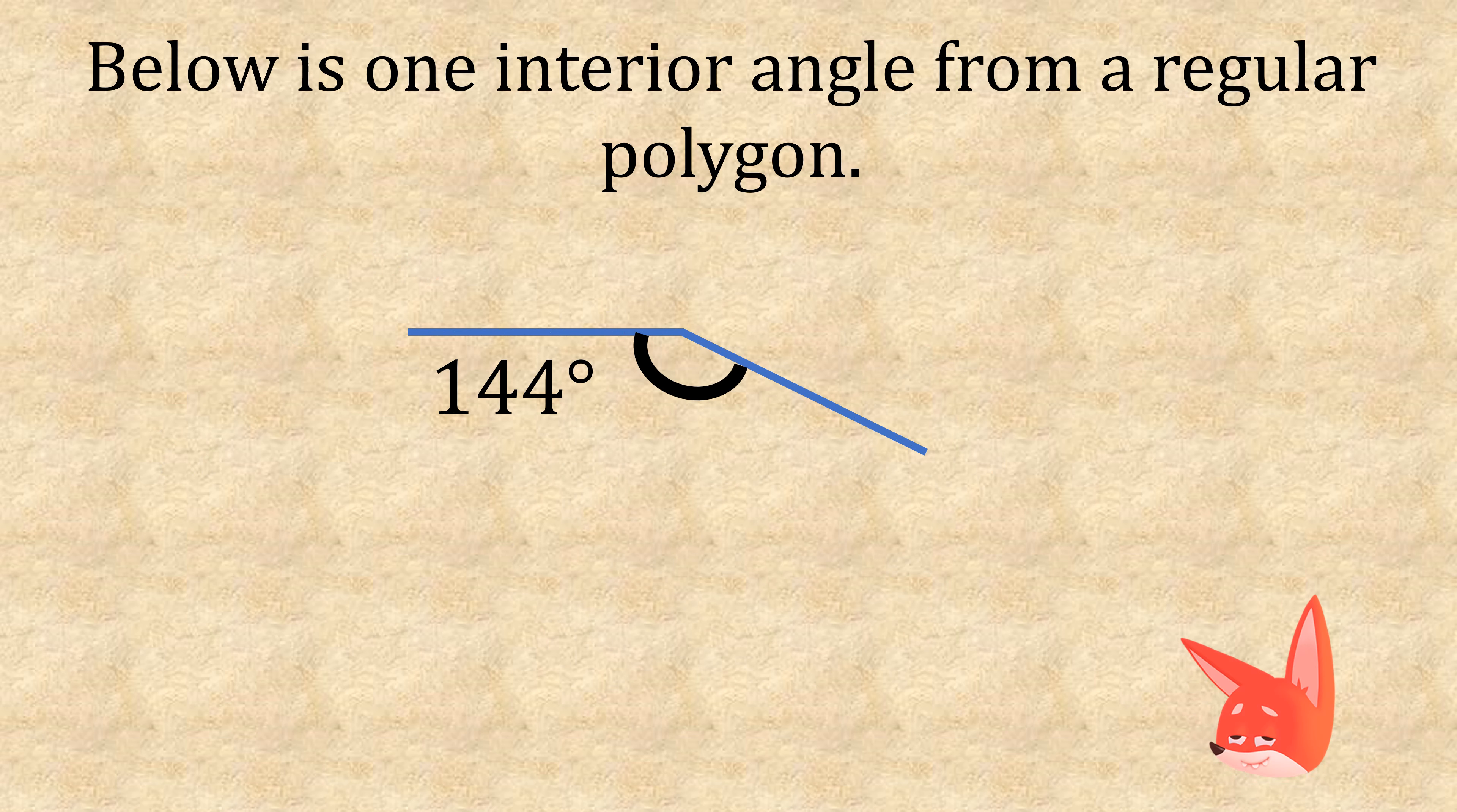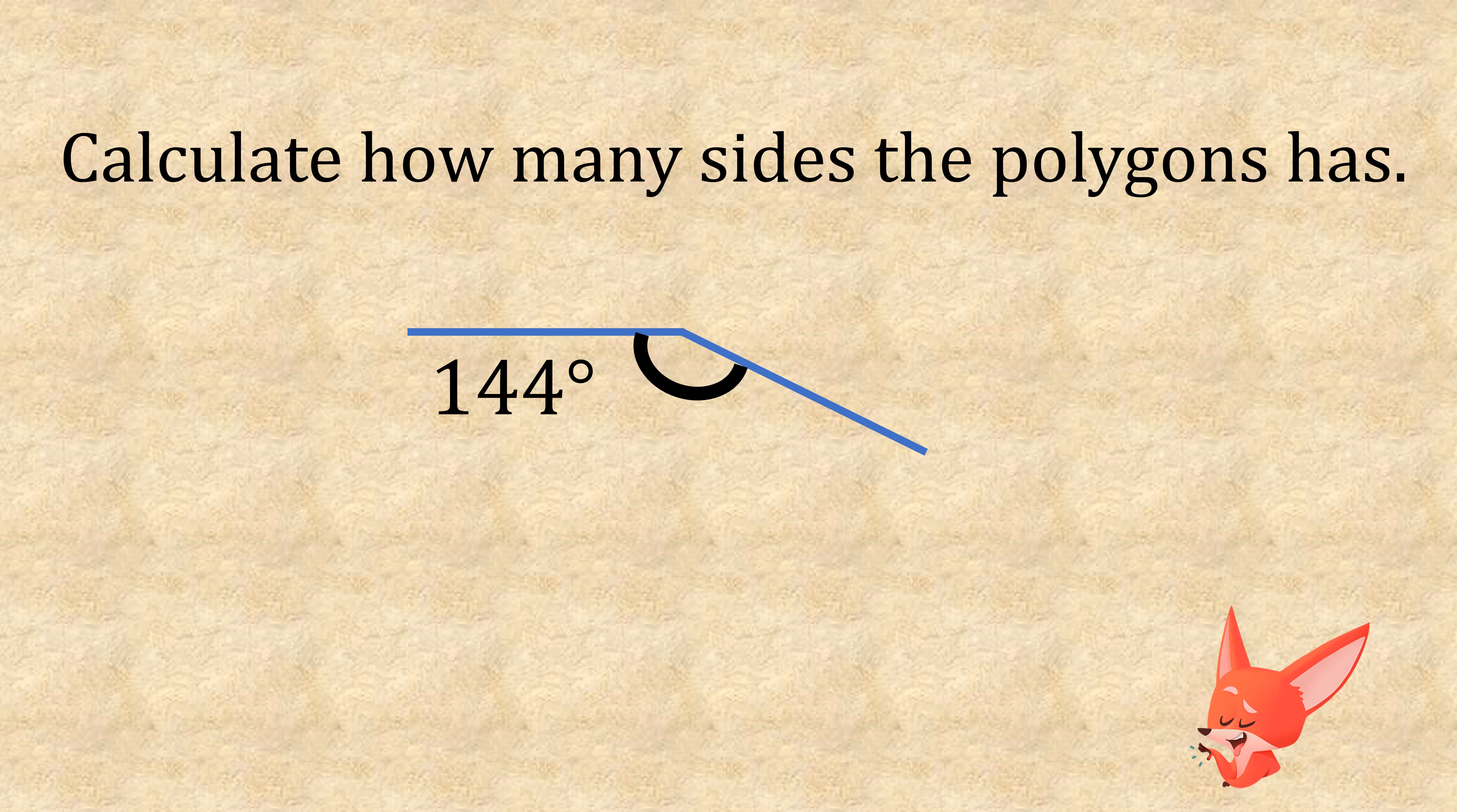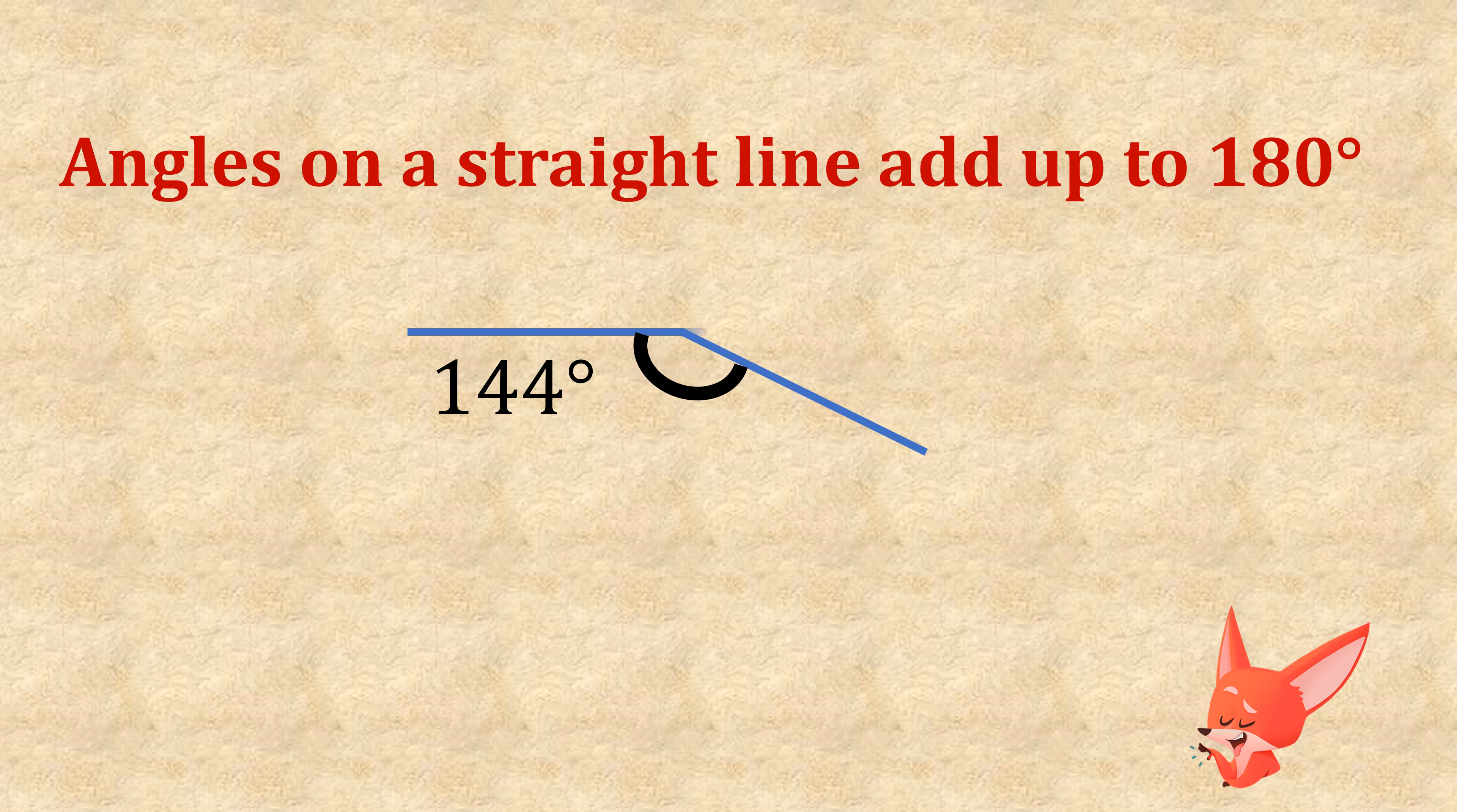Below is one interior angle from a regular polygon. Now we need to calculate how many sides the polygon has. The first thing we need to do is remember all angles on a straight line add up to 180, so we have 180 minus 144, which gives us 36. This gives us the exterior angle, which is 36.